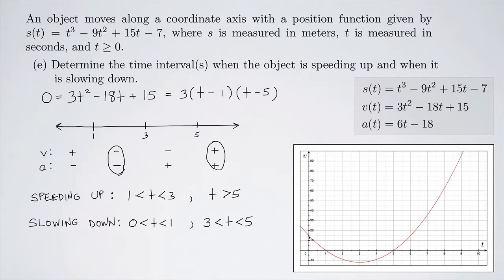Taking the absolute value: from t equals 0 to t equals 1, the velocity is positive and decreasing from 15 down to 0, so the speed is decreasing — the object is slowing down.